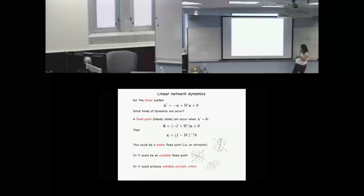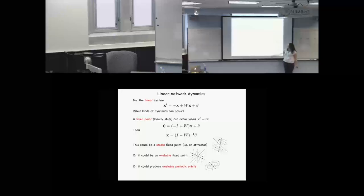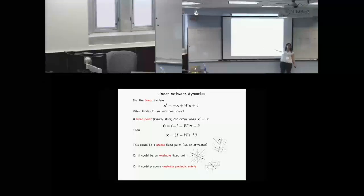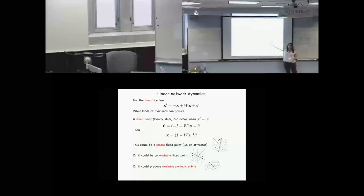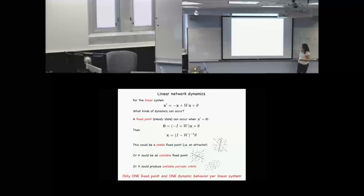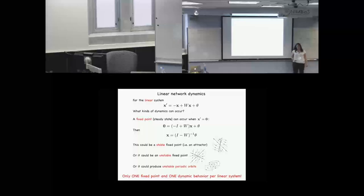Back to differential equations 101, you can classify characteristics of that fixed point: is it stable or unstable? Perturbations around it would take you in, or take you away. There are different types of stability. Or, if we had purely imaginary eigenvalues, we could get unstable periodic orbits. With a linear system, we get one and only one fixed point and one dynamic behavior per linear system.